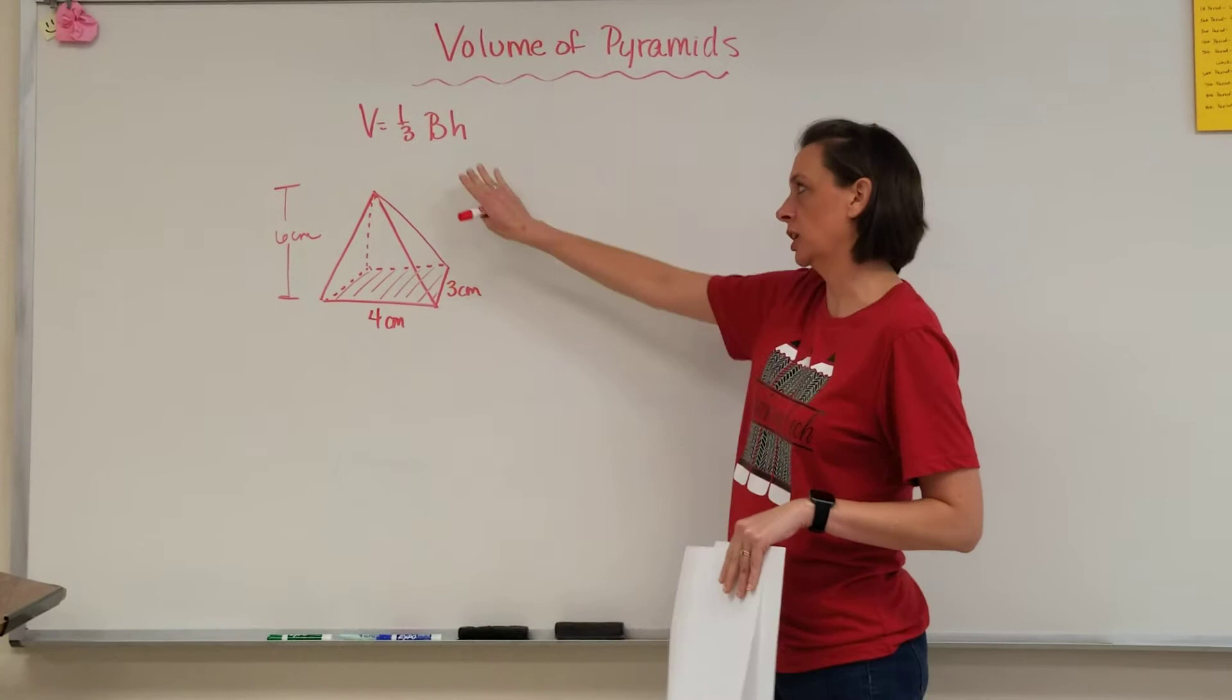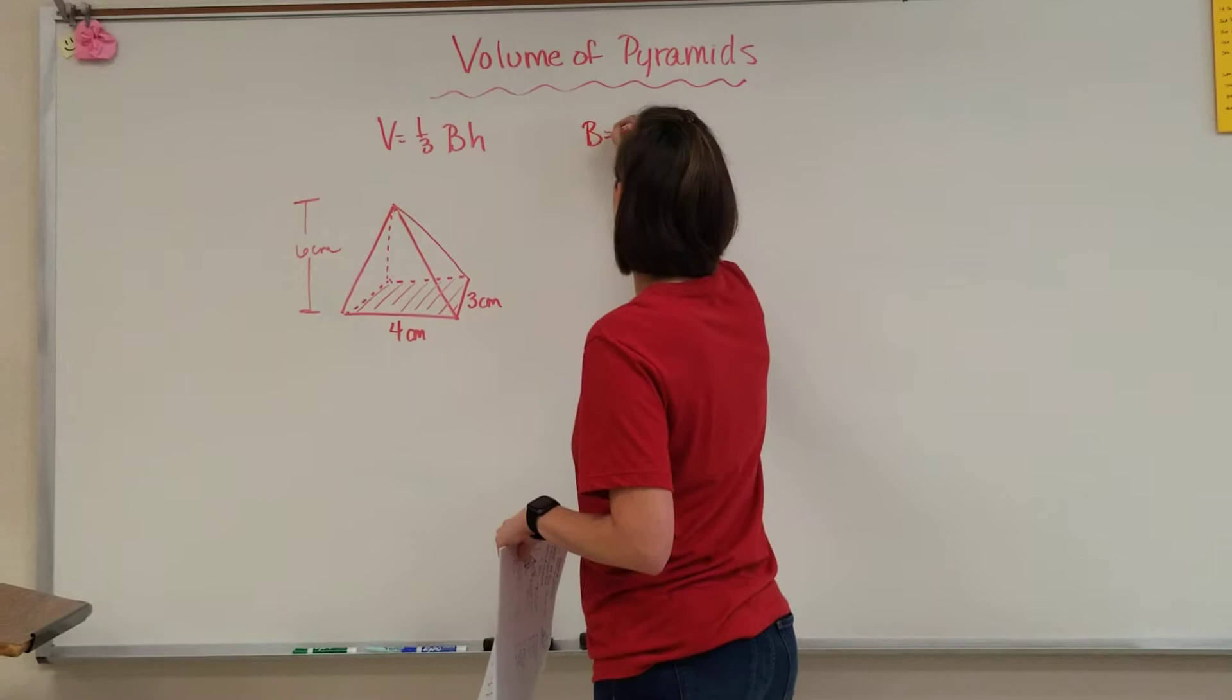And just like when we did our prisms, the big B, the capital B, is going to equal the area of the base.